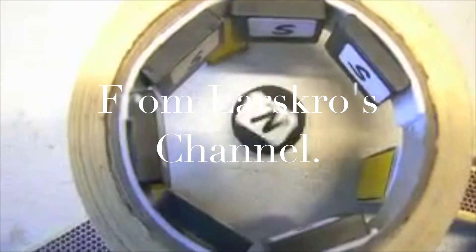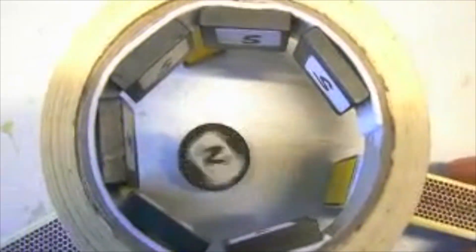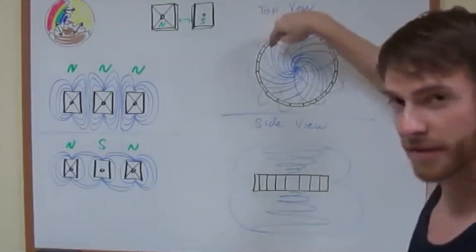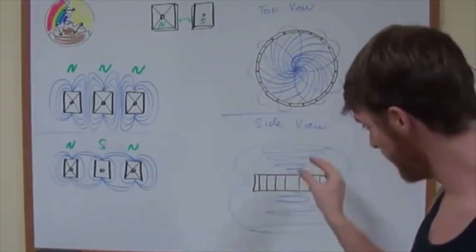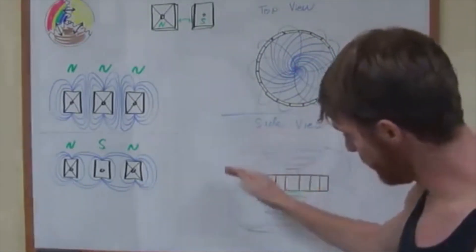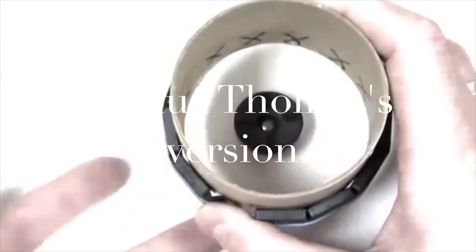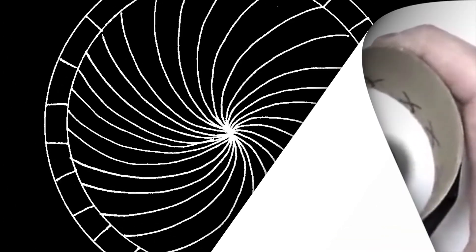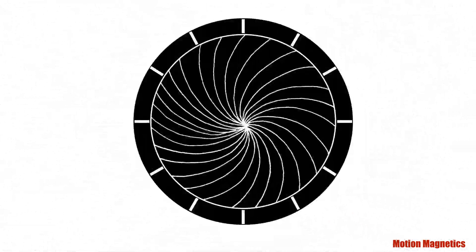It looks really interesting at first glance, but it isn't really accomplishing what it seems to be. In this video he calls the process spin vortexing. I enjoyed his video, but respectfully disagree with his analysis. He's presenting essentially the same theory as John Bedini. According to Bedini, by placing the magnets in a ring with all the north poles facing in, the spins of the individual magnets form one large thin vortex.